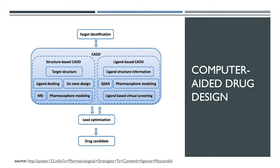Computers have been used in this domain for a while — computer-aided drug design has been around for a while. What's new is the machine learning and deep learning techniques being used more. There are two broad divisions: structure-based, where you understand the structure of the lock and design a key; and ligand-based, where you know a key works with a similar lock, so you look for similar keys. Those are the broad differentiations.